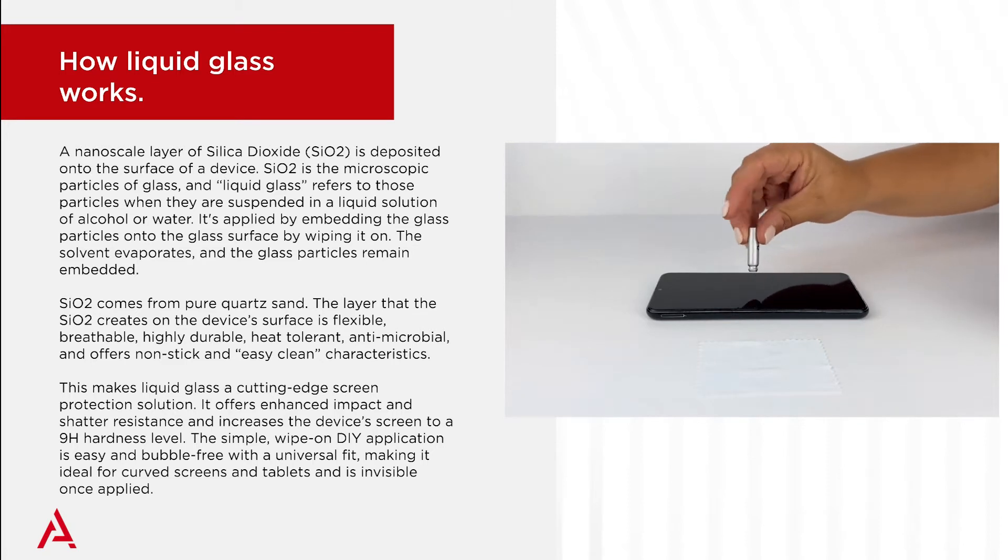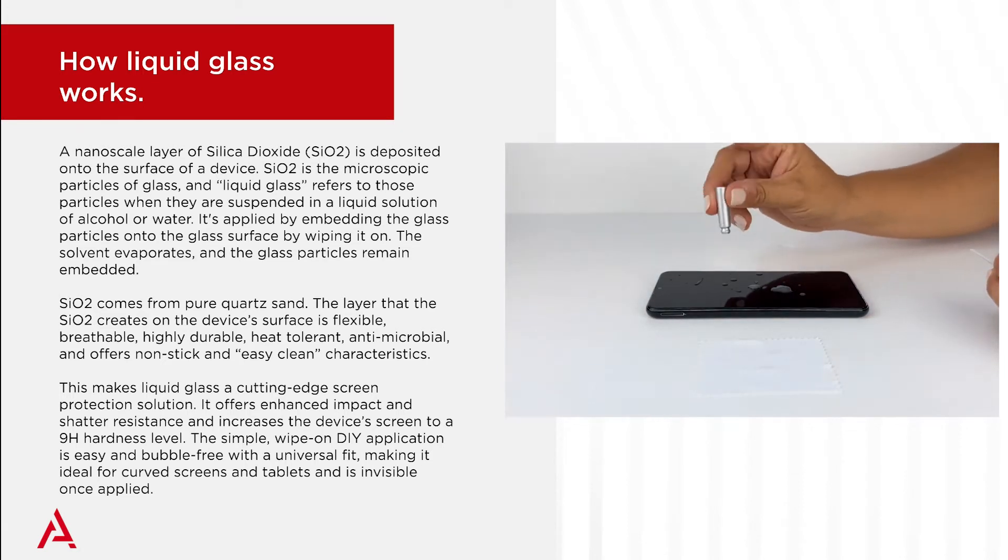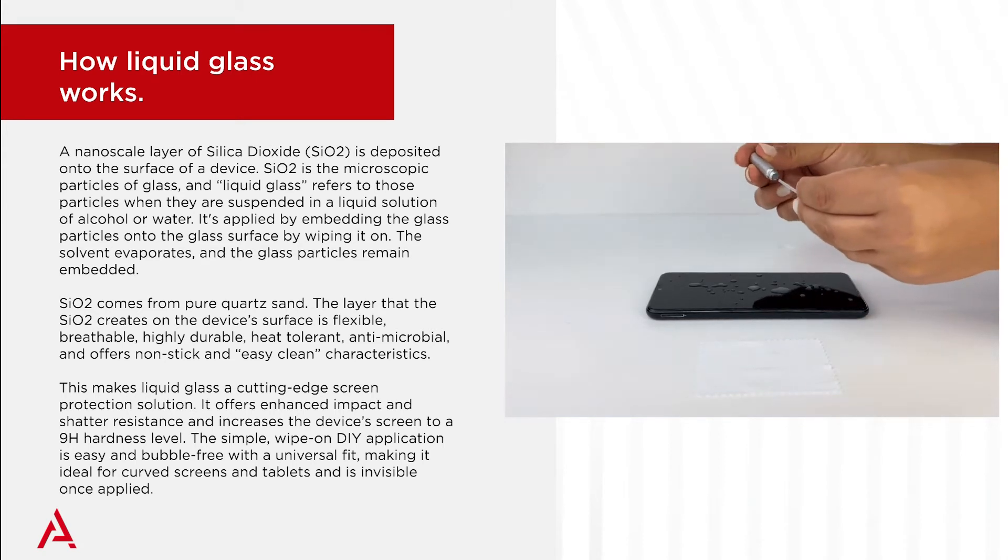Essentially, SiO2 is the microscopic particles of glass, and liquid glass refers to those particles when they are suspended in a liquid solution of alcohol or water. The coating is applied by embedding the glass particles onto the glass surface by wiping it on.